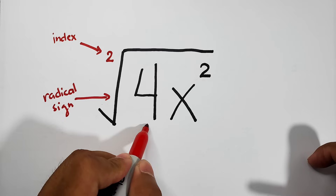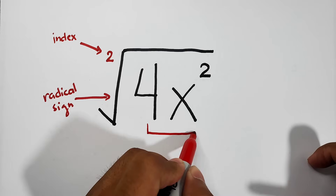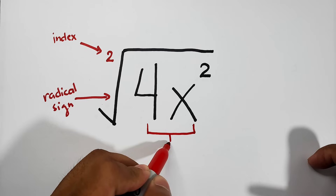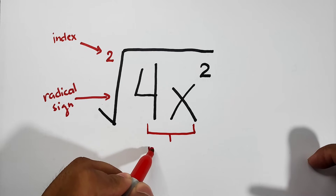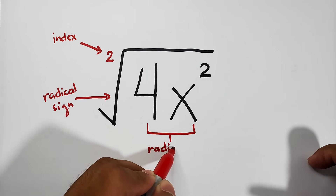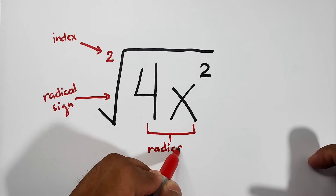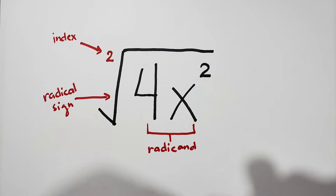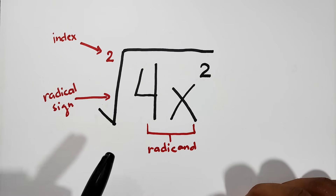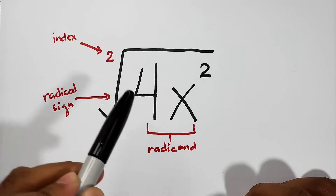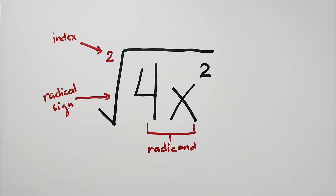So again, this is read as the square root. Next, the expression like 4x squared — the expression inside the radical sign is what you call the radicand. So when you are asked by your teacher what is the radicand of this given radical expression, you will tell her or him that the radicand is 4x squared. I hope that you get that, and let's go with the examples.